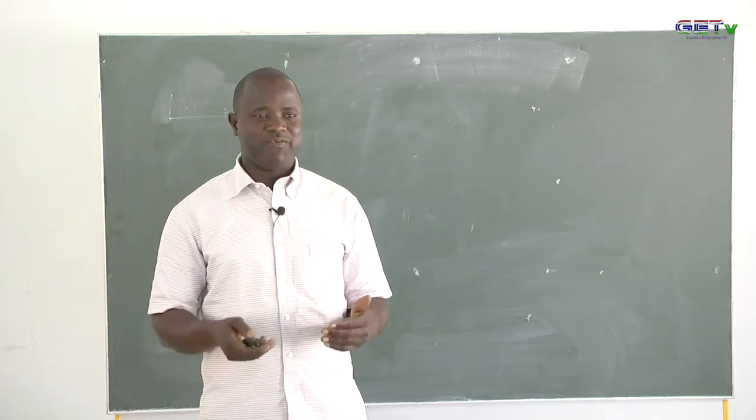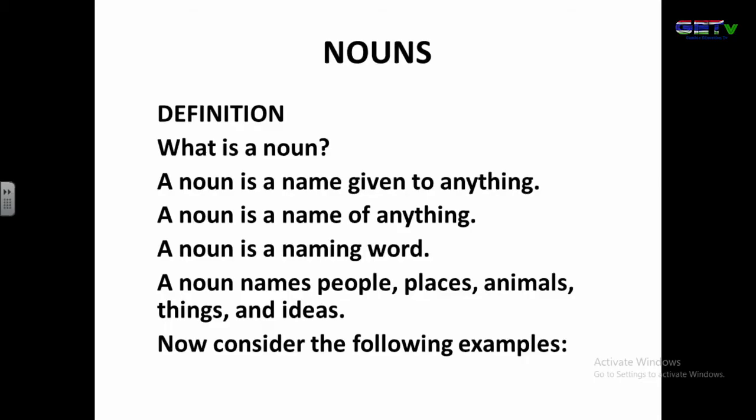Now let us look at them one after the other. We're going to start with nouns. We're going to look at the definition. How do we define a noun? A noun can be defined as a name given to anything. In other words, a noun is a naming word. We can also say a noun names people, places, animals, things, and ideas.